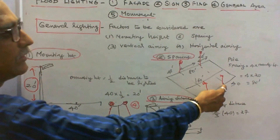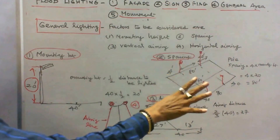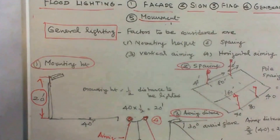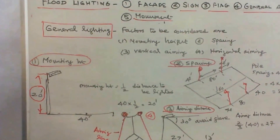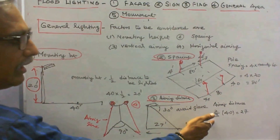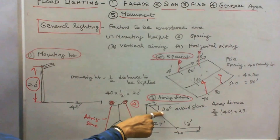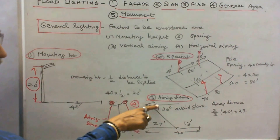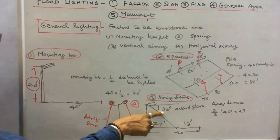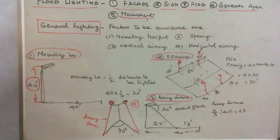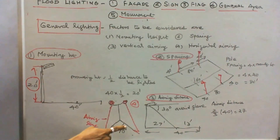We are using four projectors, so spacing must be provided accordingly. For aiming distance, the thumb rule is 2/3 times 40, which equals 27 feet. We have to provide a 30-degree angle to avoid glare from the lamp. For horizontal aiming, when using two lamps, the aiming lines should be arranged such that the angle between them is 90 degrees.